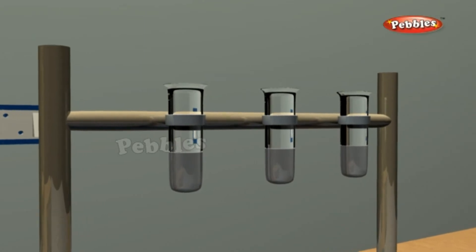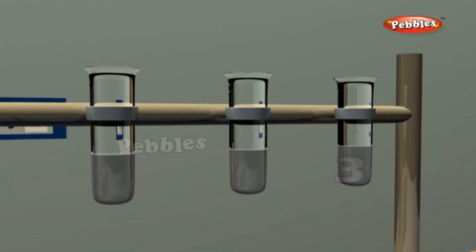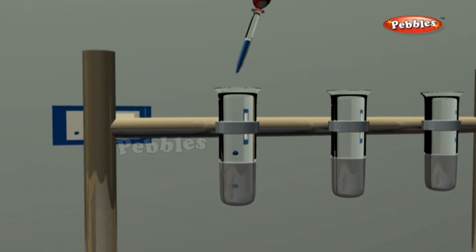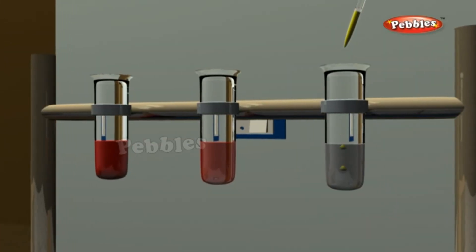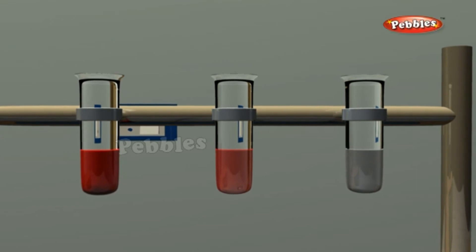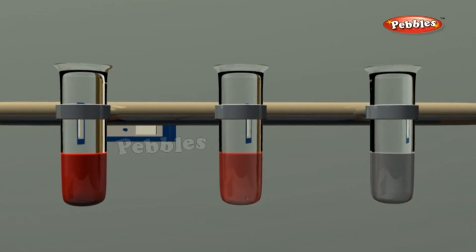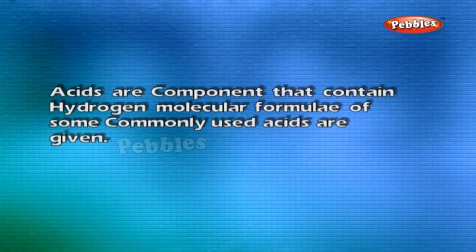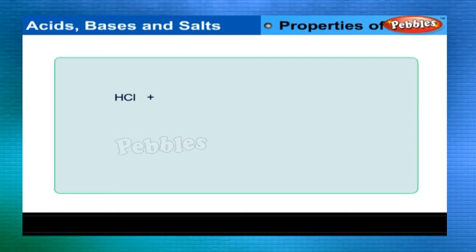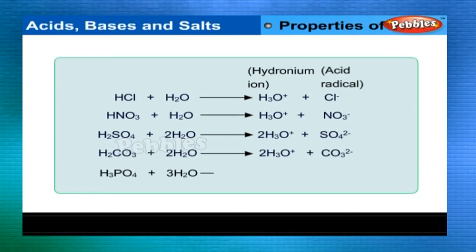All acids turn blue litmus and methyl orange red. Take a little dilute HCl or H₂SO₄ in three separate test tubes numbered 1, 2 and 3. Add two drops of blue litmus, methyl orange and phenolphthalein in test tubes 1, 2 and 3 respectively. You will notice that blue litmus and methyl orange turn red, whereas phenolphthalein remains colourless. Acids are compounds that contain hydrogen and form hydronium ions (H₃O⁺) in aqueous solutions.